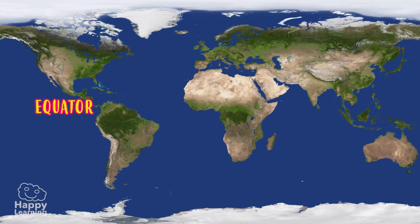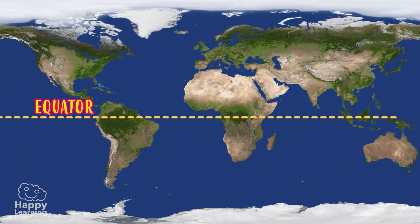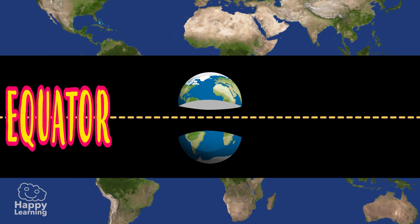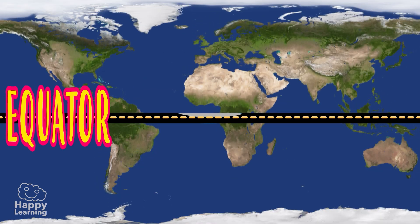The equator is an imaginary line that divides the Earth horizontally, right down the middle, as if we were splitting it in two.